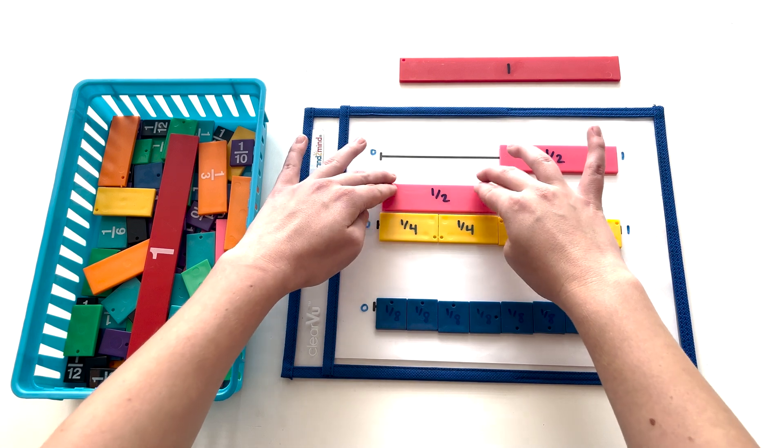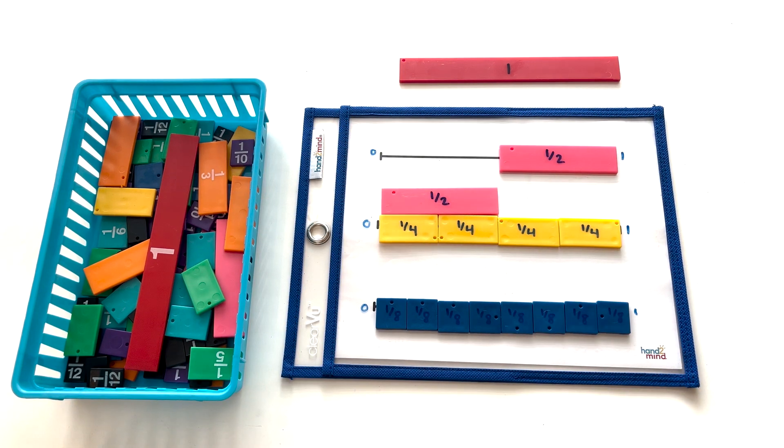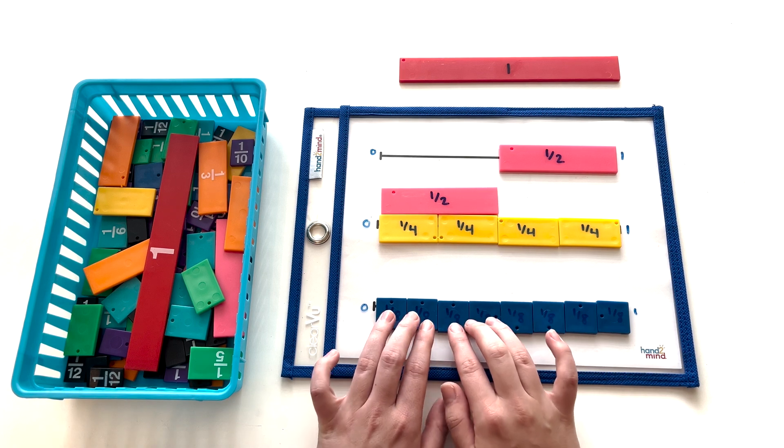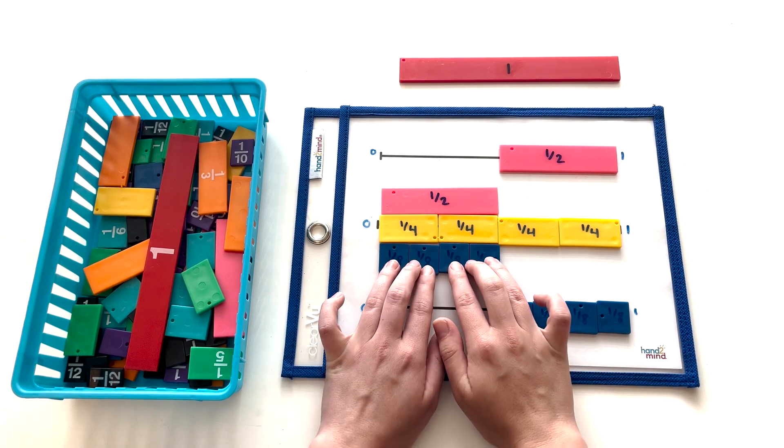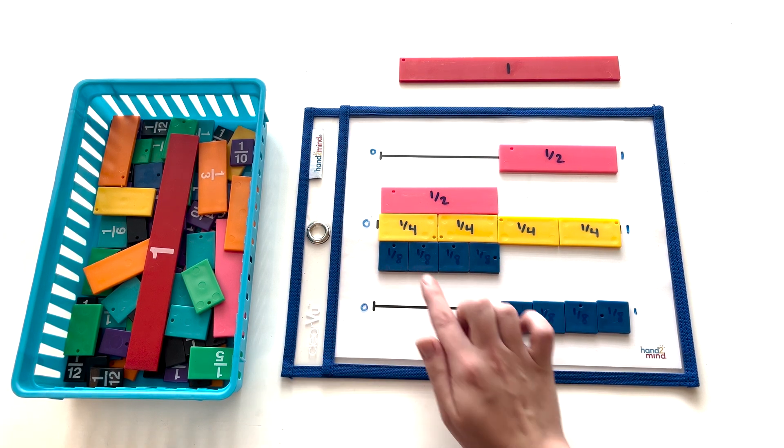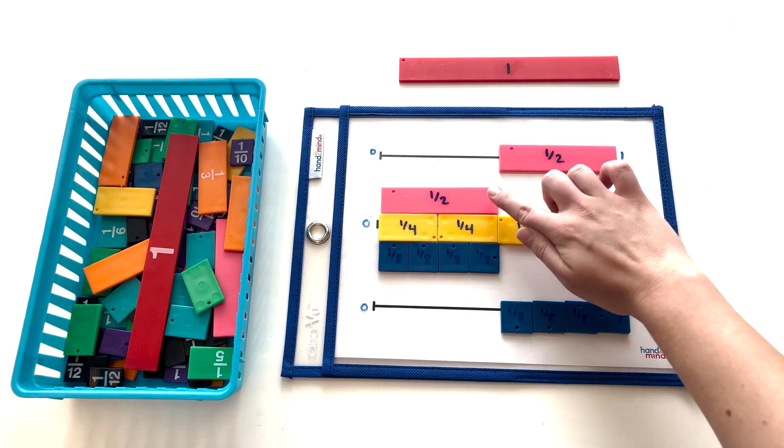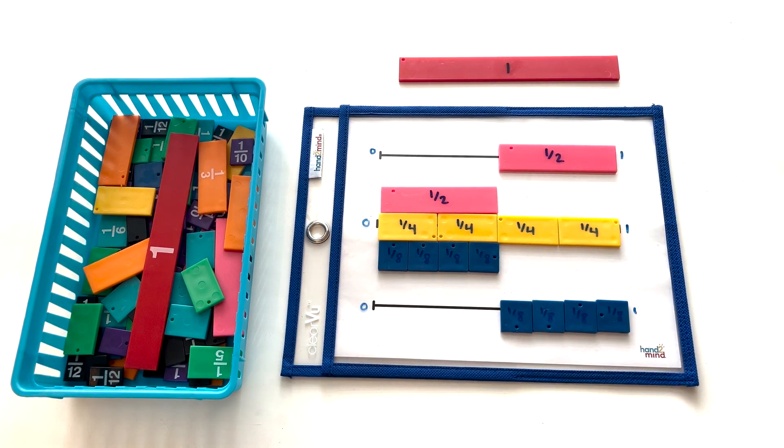So next, we're going to be comparing fractions. And here we can see that two one-fourth pieces equals one-half, and four one-eighth pieces equals one-half. From this, we can see that two-fourths equals one-half, and two-eighths equals one-fourth.